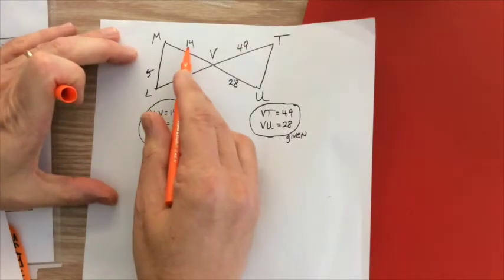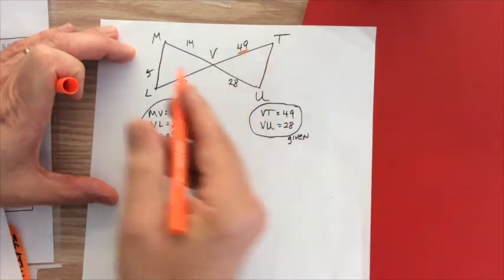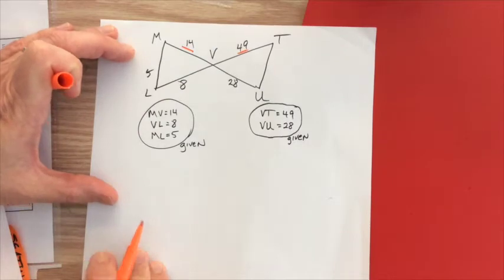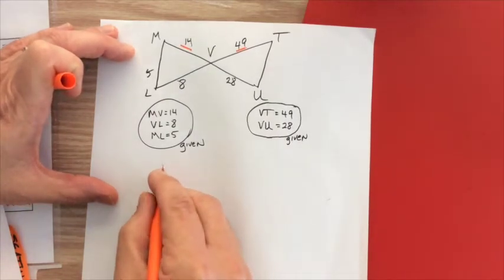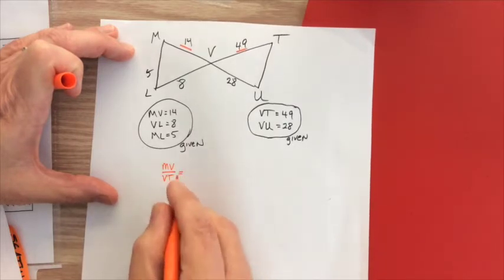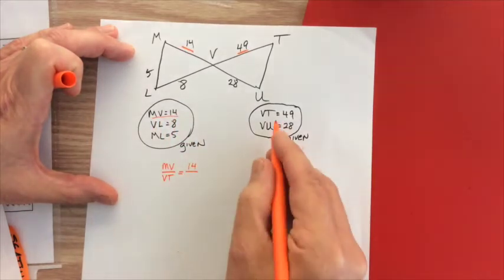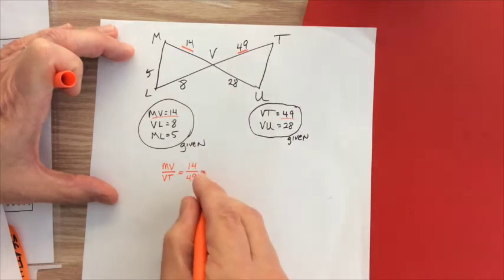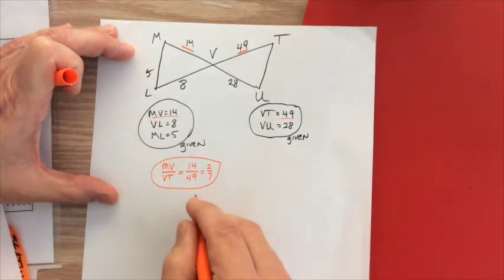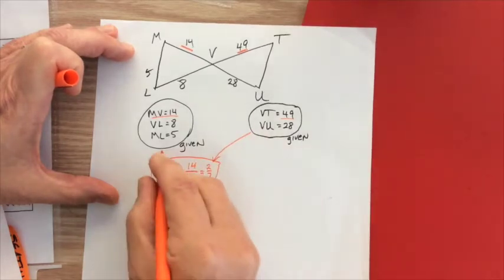So taking a look at these sides, this is the larger of the two sides, and this is the larger of these two sides. So what you want to do is create that ratio, MV to VT, and we have that number here is 14, and we have VT is 49. And if we divide top and bottom by seven, we'll get two over seven, and that's the ratio. And we use this piece of information here and this piece of information here to get it.